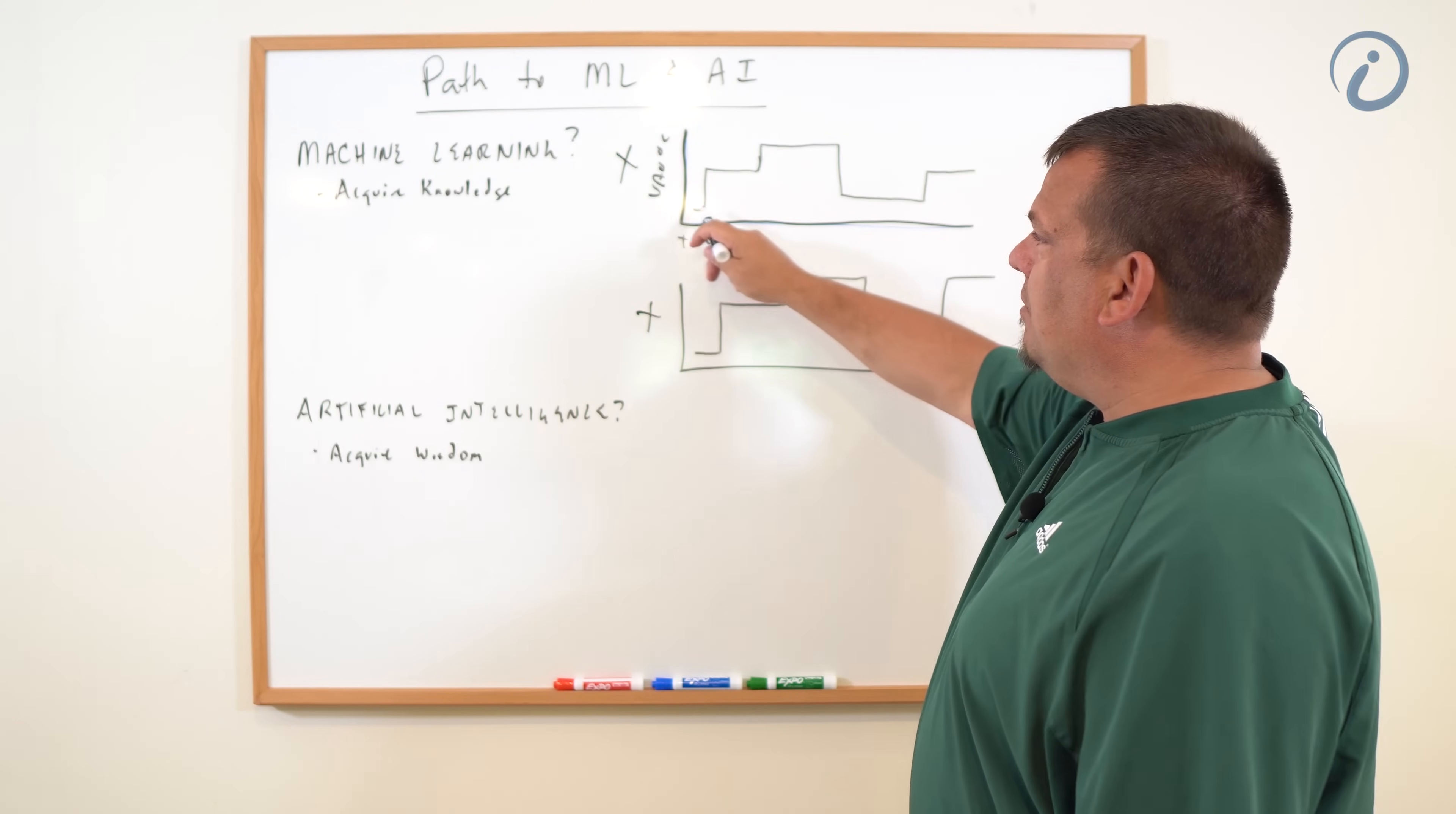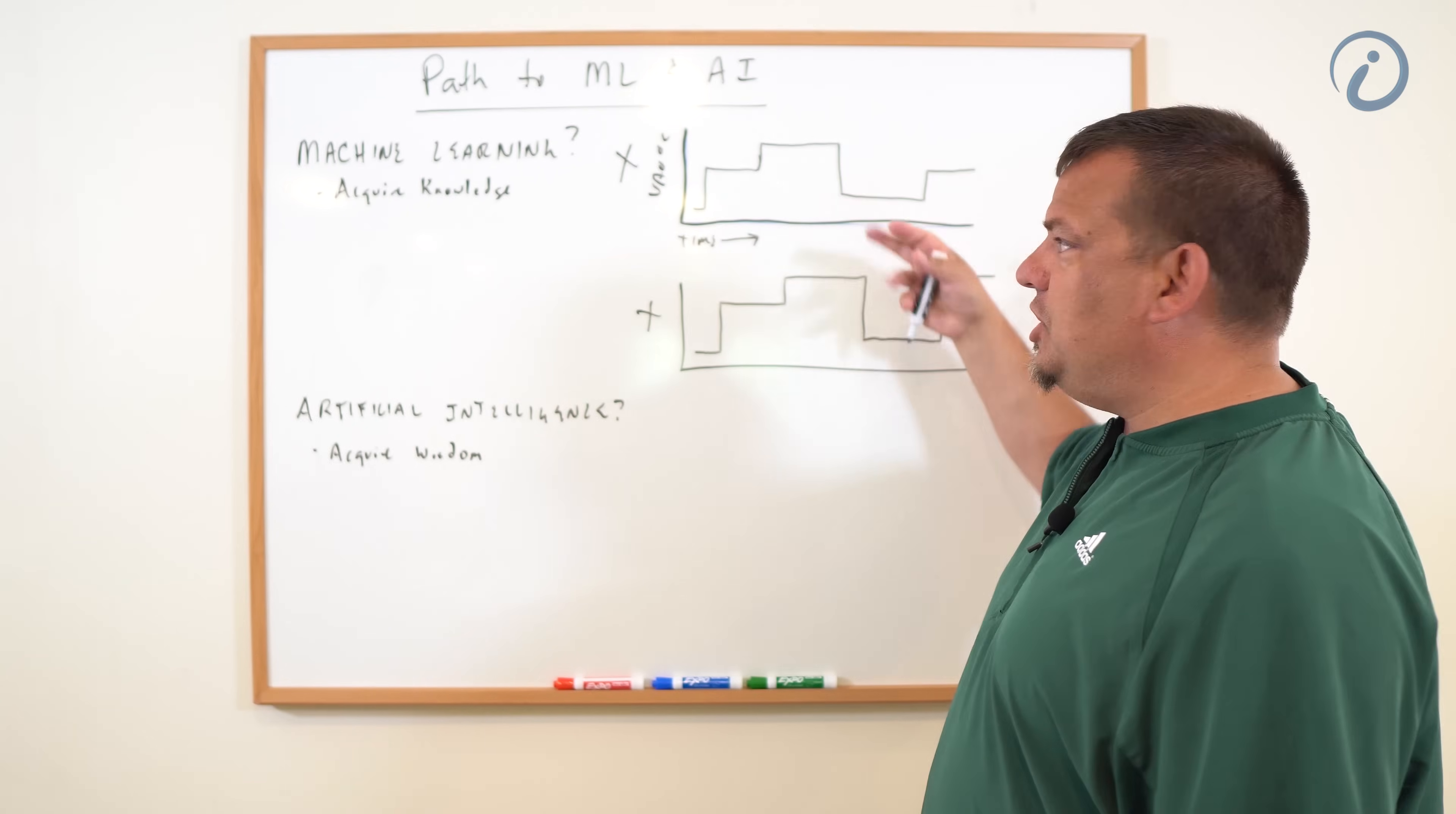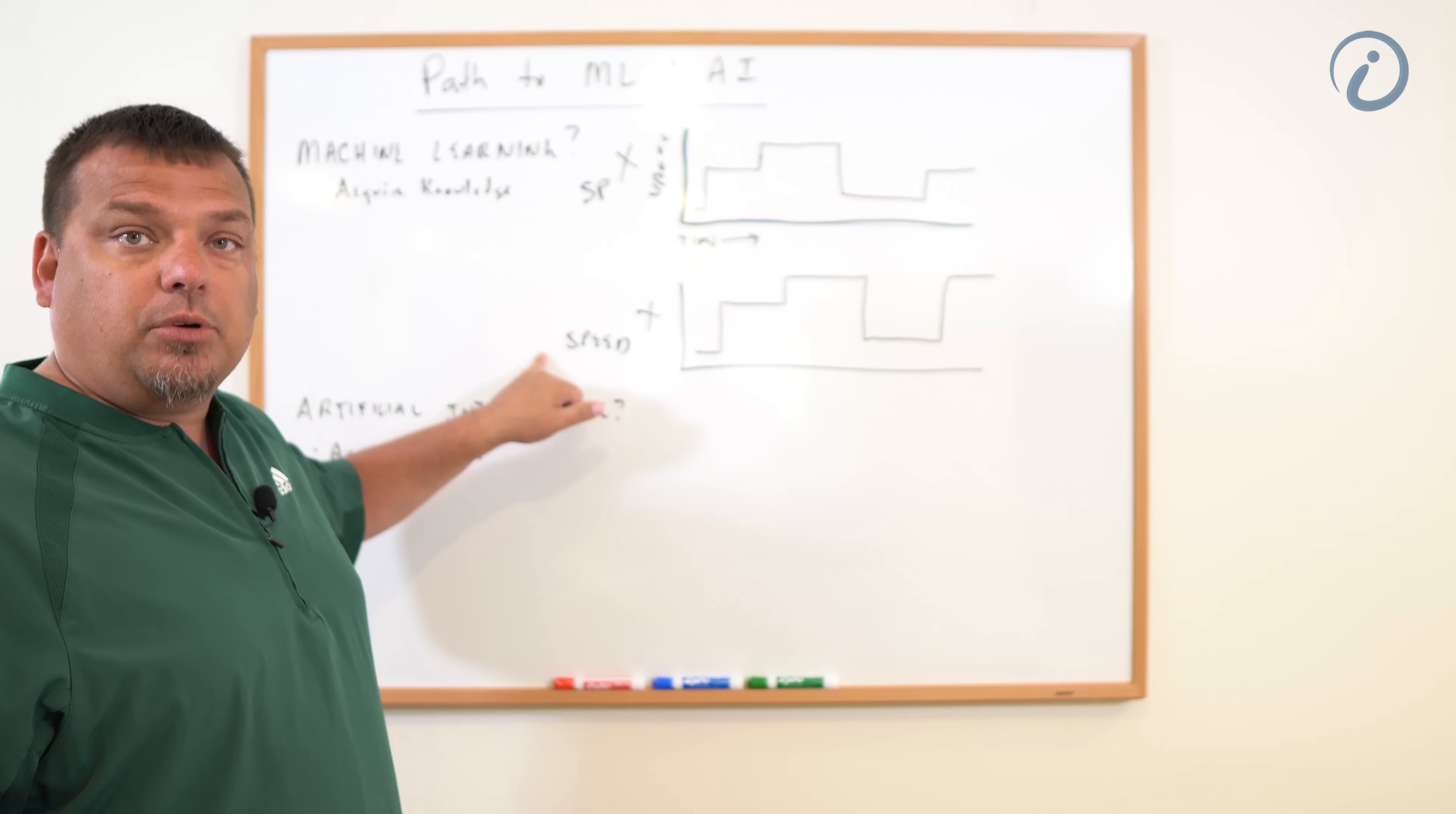It determines that whenever this value changes up or down, within a few seconds, the value of this variable tries to copy it. So what it's learning is that this variable controls the output of this variable. There is a relationship between the two. It's acquired knowledge. Over a series of time, our machine learning algorithm may ultimately say this is our set point and this is our machine speed. It may determine that this is the speed set point and this is the actual speed feedback that we're reading.